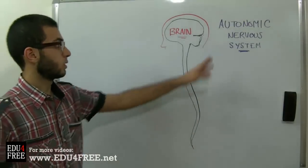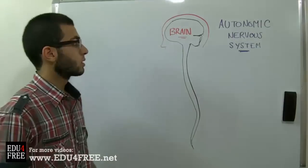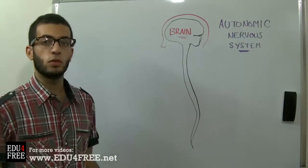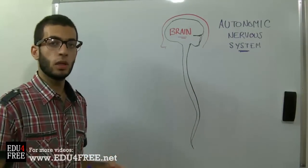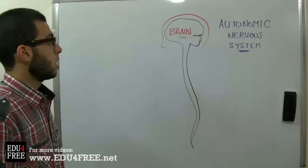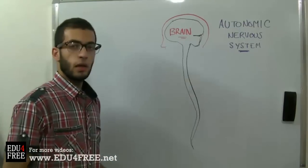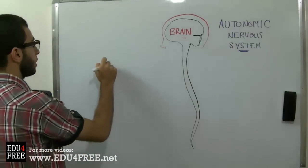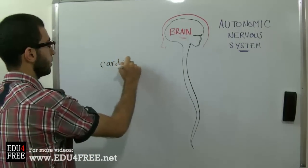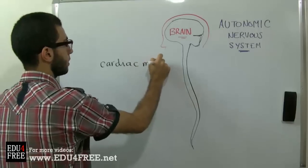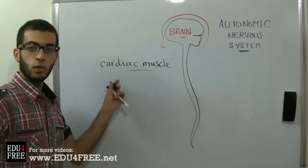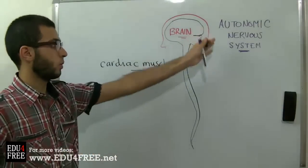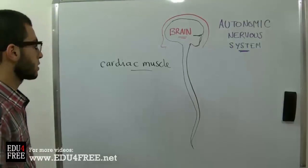Today we are going to talk about the Autonomic Nervous System. The Autonomic Nervous System is the part of the nervous system which controls actions that the human cannot control himself. These are called involuntary actions. For example, the action of the cardiac muscle — the muscles controlling the heart — you cannot control this yourself; the Autonomic Nervous System controls these muscles.